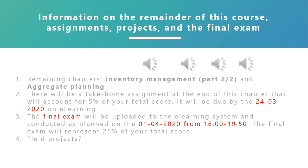We have two remaining chapters in this course. We need to first finish the chapter on inventory management with two remaining models: the reorder point model and the quantity discount model. And then the last chapter would be called aggregate planning — it's chapter 11. That chapter won't be that important compared to the rest of what you have seen since the midterm. So you can expect that the bulk of the final exam will be about chapters going from statistical process control to inventory management included.